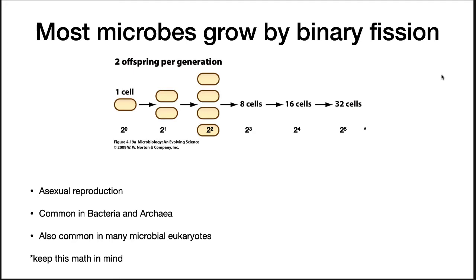Many microbes grow by binary fission, and it is the best understood. In this form of asexual reproduction, one bacterium splits into two identical forms. In the next generation, those two become four, then four become eight, and so on. This is a common mode of growth in bacteria, archaea, and microbial eukaryotes.